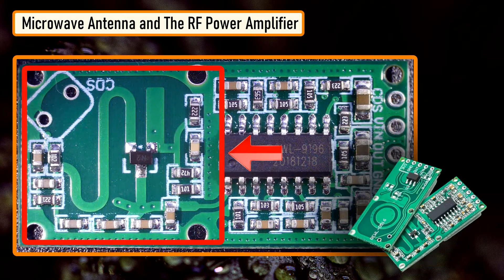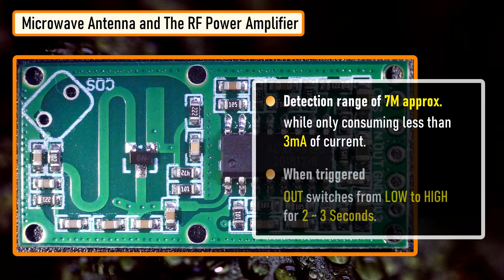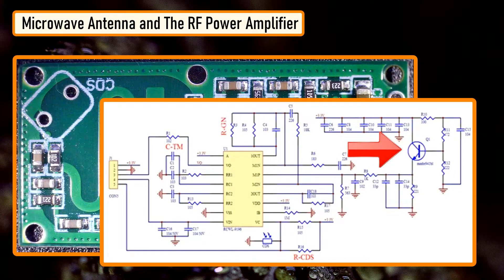It has a detection range of approximately 7 meters while consuming less than 3mA of current. When triggered, the output pin will switch from low 0V to high 3.3V for 2 to 3 seconds before returning to its low idle state. The transistor Q1 also acts as a mixer that combines the transmitted and received signal and outputs the difference, which is filtered by the low-pass filter formed by C9 and R8, and is amplified by the IC.